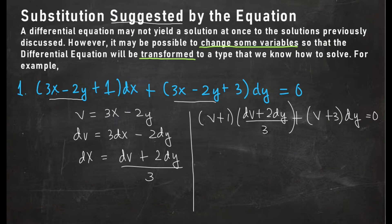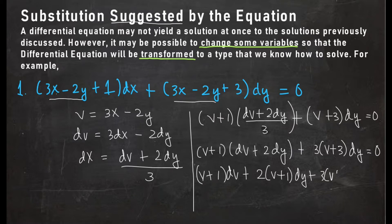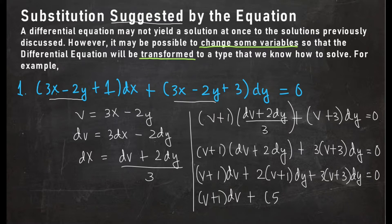Multiplying both sides by 3, we get (v + 1)(dv + 2dy) + 3(v + 3)dy = 0. Distributing (v + 1) gives (v + 1)dv + 2(v + 1)dy + 3(v + 3)dy = 0. Combining the dy terms: 2v + 3v = 5v and 2 + 9 = 11. This is now a differential equation solvable by separable variables.